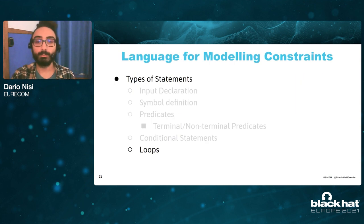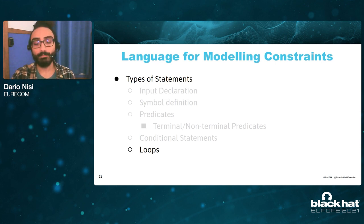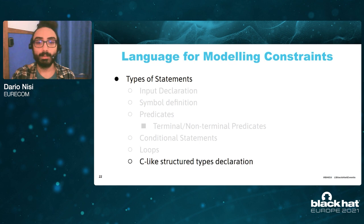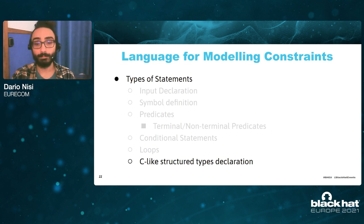In our language, we also support loops, which can be really handy to handle those constraints that the original software enforces on each entry of a table-like structure, such as the section table. We also support structured types, and the cool thing is that you can define your structured types using C-like syntax.